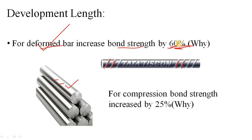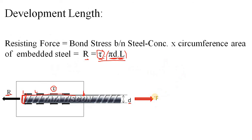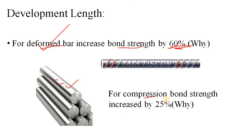There is another provision: in the case of compression, our discussion so far has been in tension. If the force applied is compressive, the bond strength increases by about 25 percent. Why this happens is your task to research and find out. Please let me know in the comment box whether you have found the answer or not.